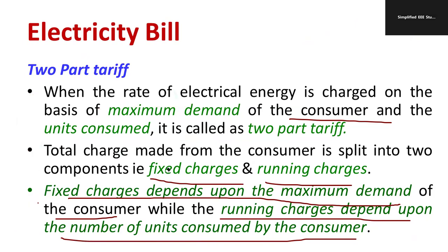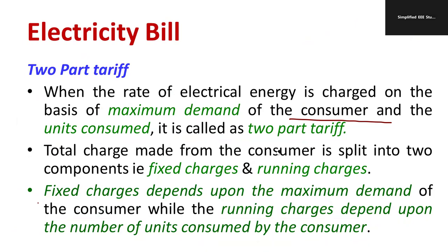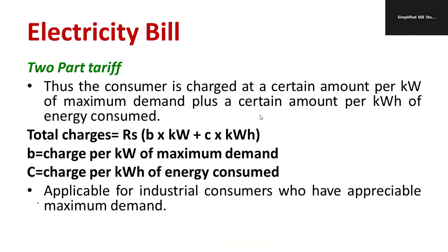That is what is called a two-part tariff. We should be familiar with the two components of two-part tariff. We can write a simple formula for computing the total electricity bill using two-part tariff. The total charge is given by: Rupees = B × KW + C × KWh. Here B × KW represents the charge per kilowatt of maximum demand, that is called the fixed charge.